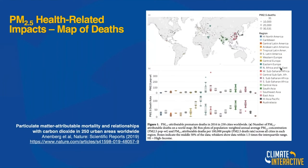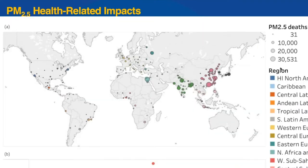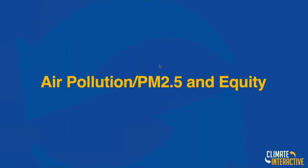Where is it happening? This map from Nature shows deaths from PM2.5 around the world — the bigger the circle, the more the deaths, above 30,000 in parts of China, the Middle East, big ones in India, and really all over. Here's some in Russia. We're seeing people dying prematurely from PM2.5 all over the world.